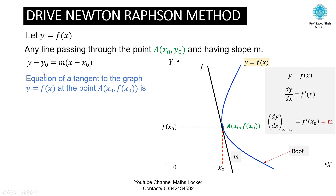In the tangent equation, we replace y₀ with f(x₀) and m with f'(x₀). So the equation of the tangent becomes: y - f(x₀) = f'(x₀)(x - x₀). This is the equation of the tangent to the curve at point A.